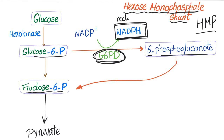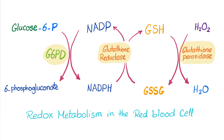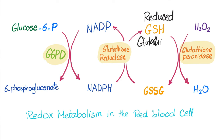NADPH is the reduced form of oxidized NADP+. Without G6PD there is no NADPH. Why is NADPH so important? Here in the red blood cell we have redox metabolism. Redox involves the reduction of a compound called glutathione. When glutathione is oxidized we want it reduced — we are extremely happy when glutathione is in its reduced form. Reduced glutathione will protect the red blood cell from evil free radicals.